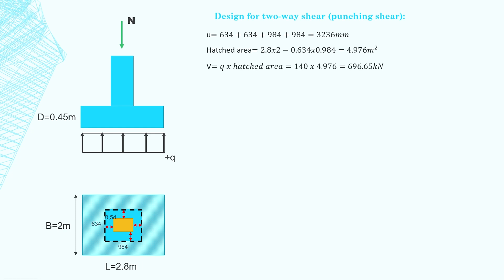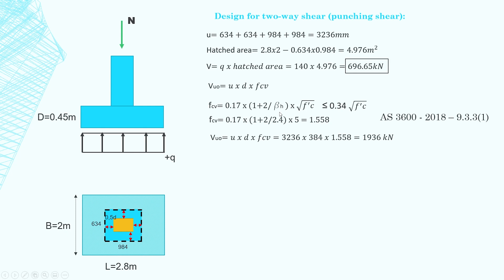To work out the concrete capacity we use this formula. We know u we know d we just need to find fcv and fcv comes from this formula in clause 9.3.3. fcv needs to be equal or less than 0.34 square root of the concrete strength. bh is the ratio of larger column dimension to smaller column dimension which works out to be 2.4. So we find fcv to be 1.558. Plugging the numbers into the equation we find that vuo is 1.936 meganewtons.